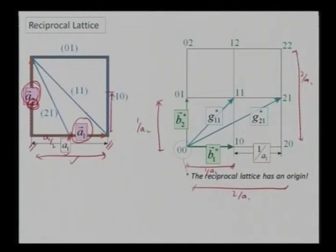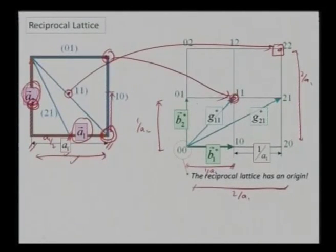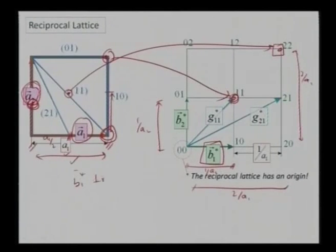The point 1,1 in real space converts to a corresponding point in reciprocal space, and point 2,2 goes to another location. That is how I construct my reciprocal lattice. One more important condition: my new b₁ vector is perpendicular to my a₂ vector, and my b₂ vector is perpendicular to a₁. So the reciprocal lattice has unit vectors perpendicular to the real-space lattice vectors.